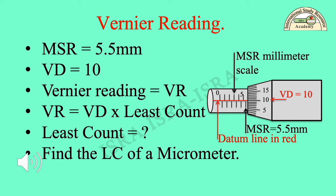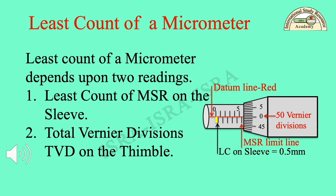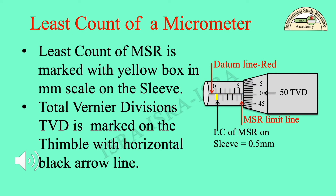What is the least count? The least count LC of the micrometer depends upon two readings. The first is the least count of MSR on the sleeve. The second is the total Vernier division TVD on the thimble. The least count of MSR is marked with a yellow box in the millimeter scale on the sleeve. The total Vernier division TVD is marked on the thimble with a horizontal black arrow line.